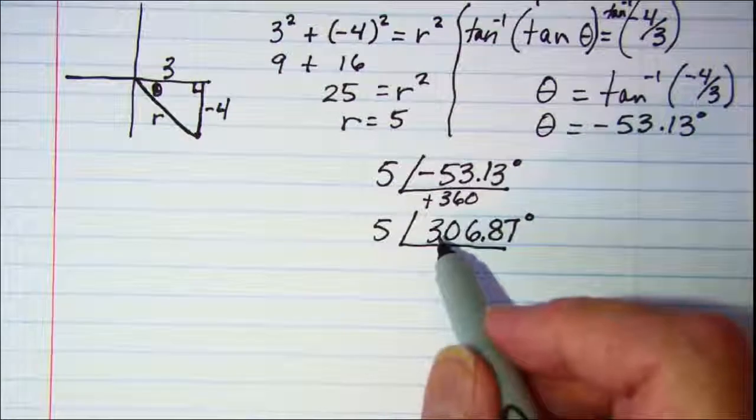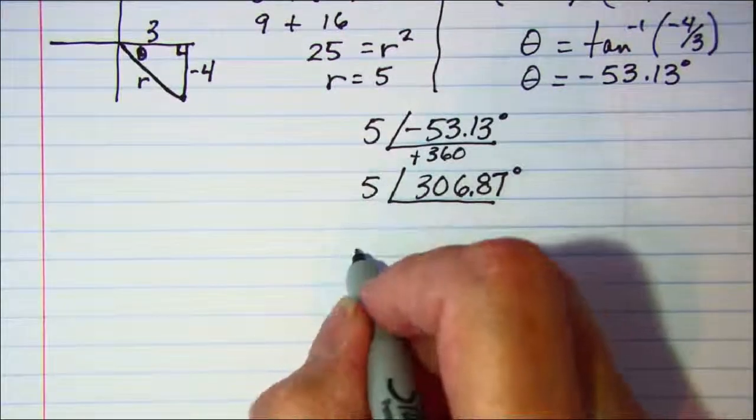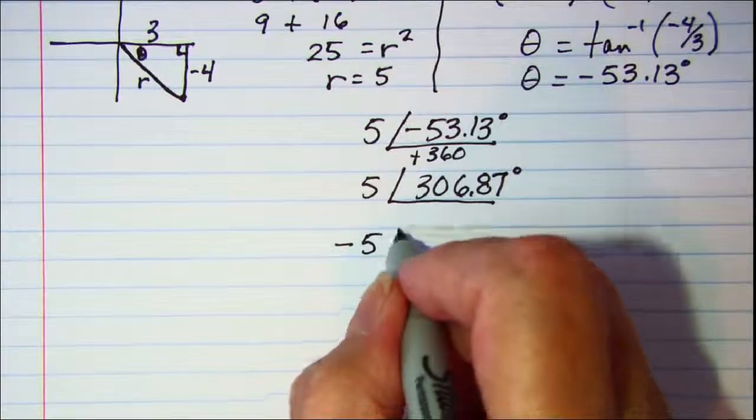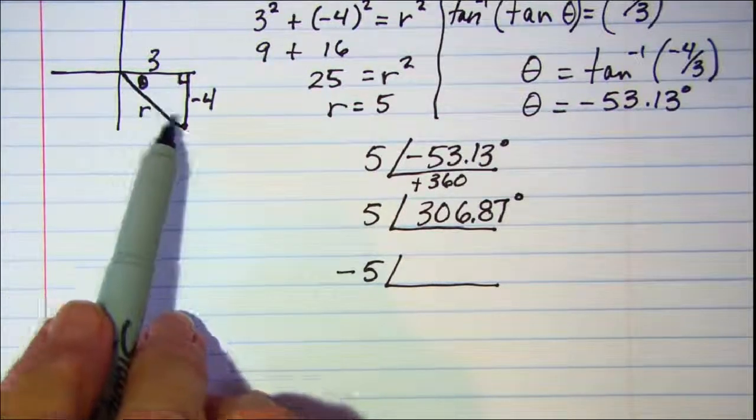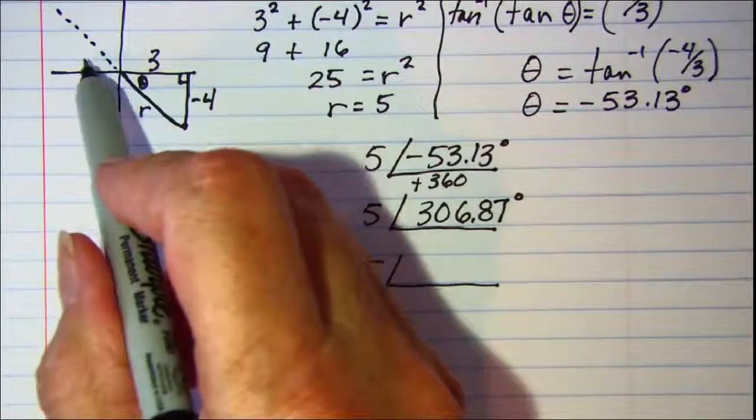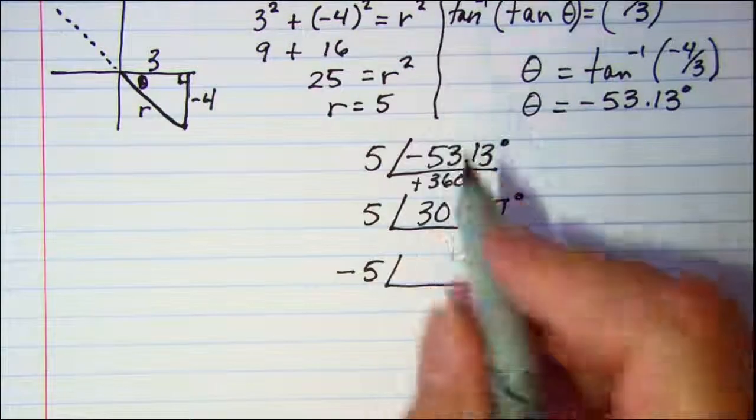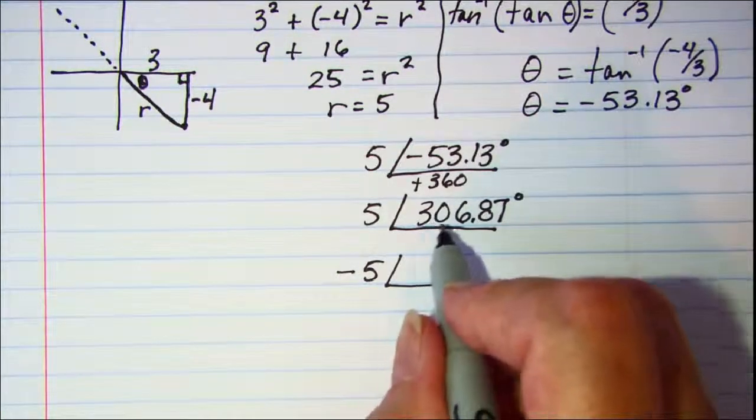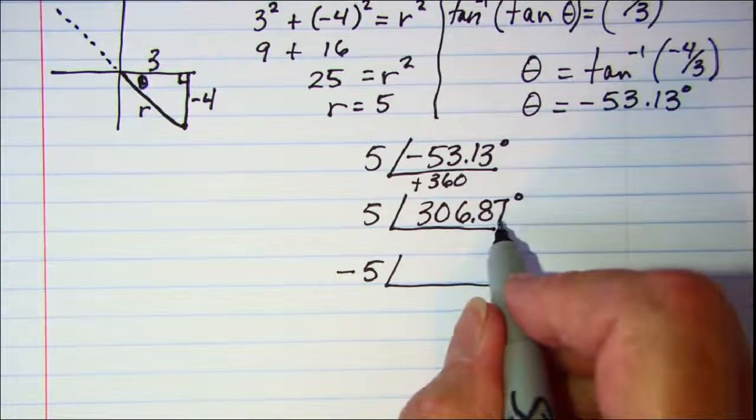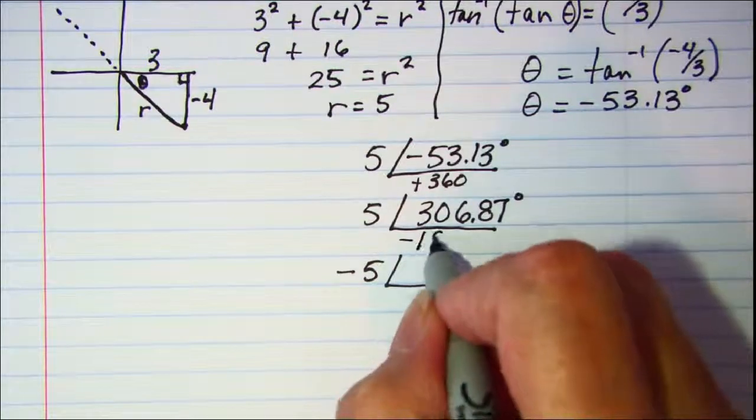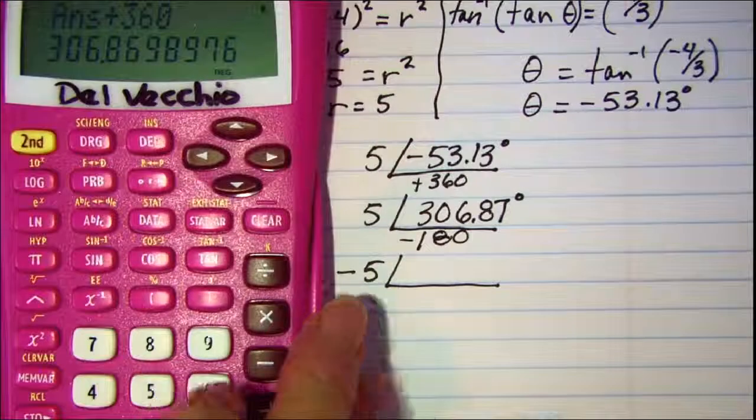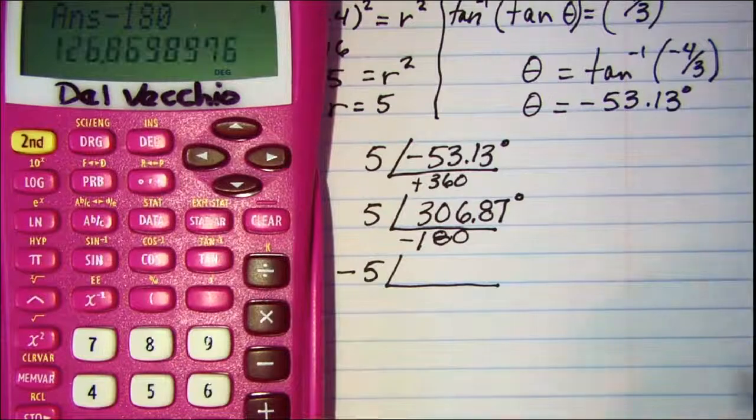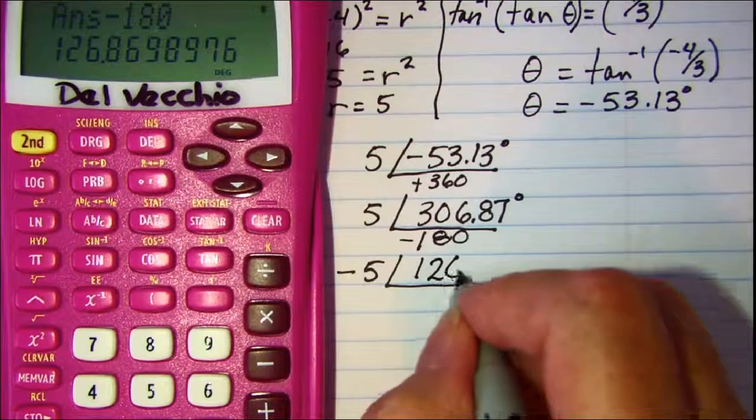Another form is if we have a negative r value, so negative 5 out in front. For a negative r value, we'll be up 180° from this vector. We don't want to add 180 because that will put us over 360° for our angle, so we'll subtract 180. That gives us -5∠126.87°.